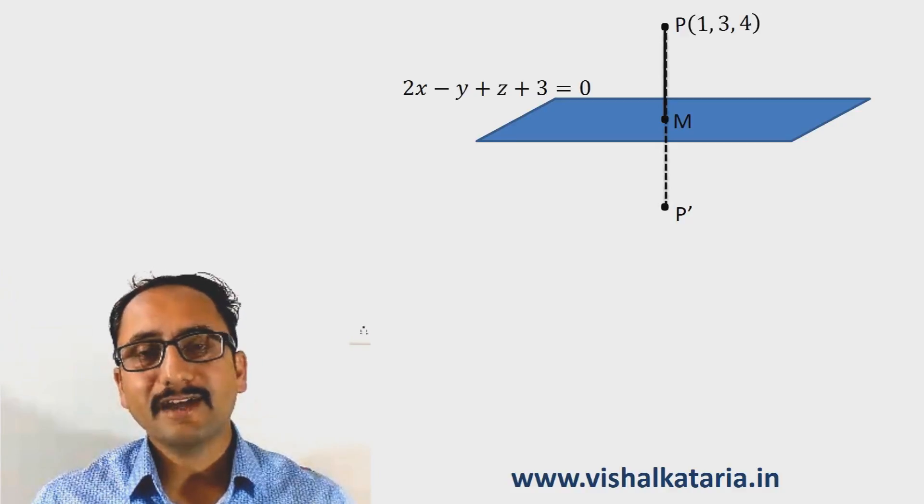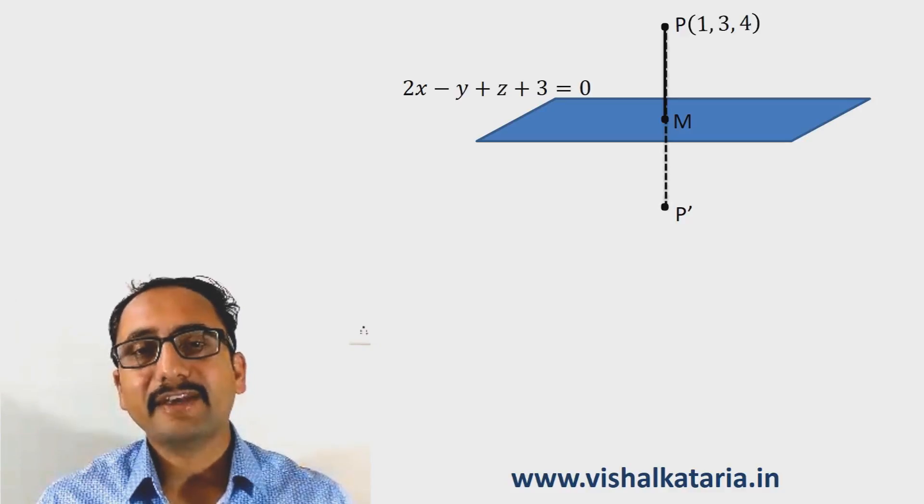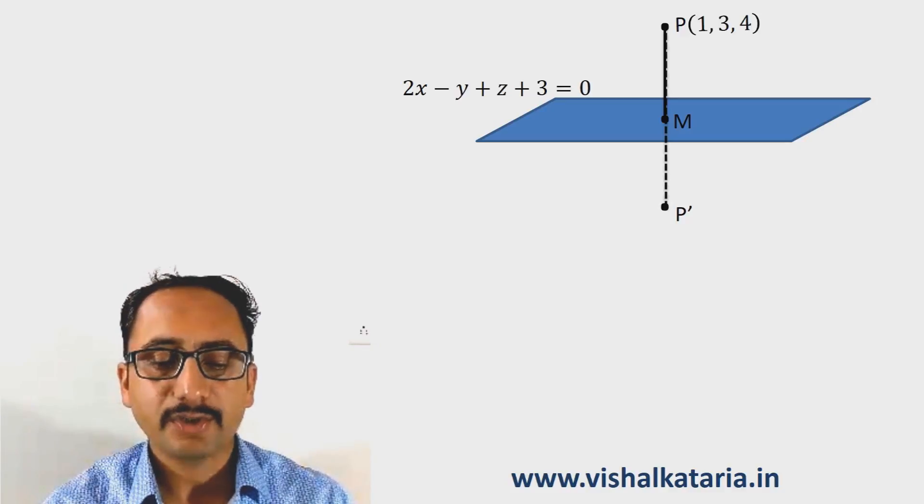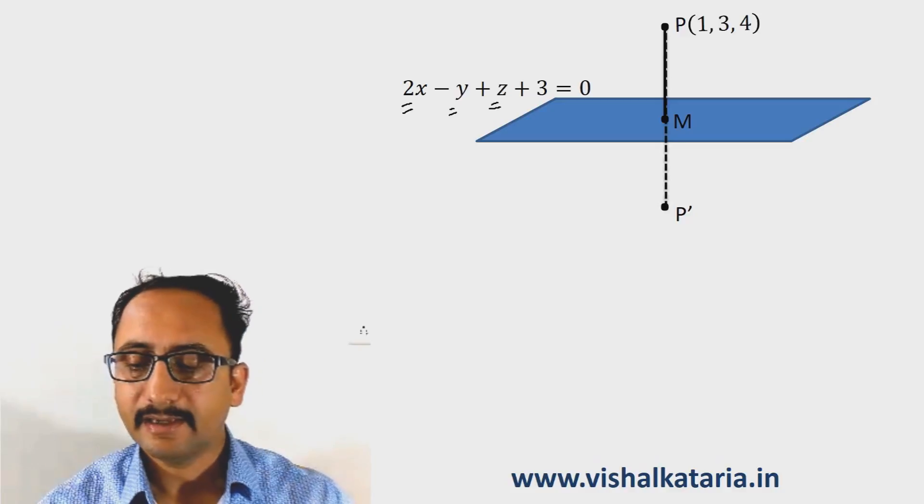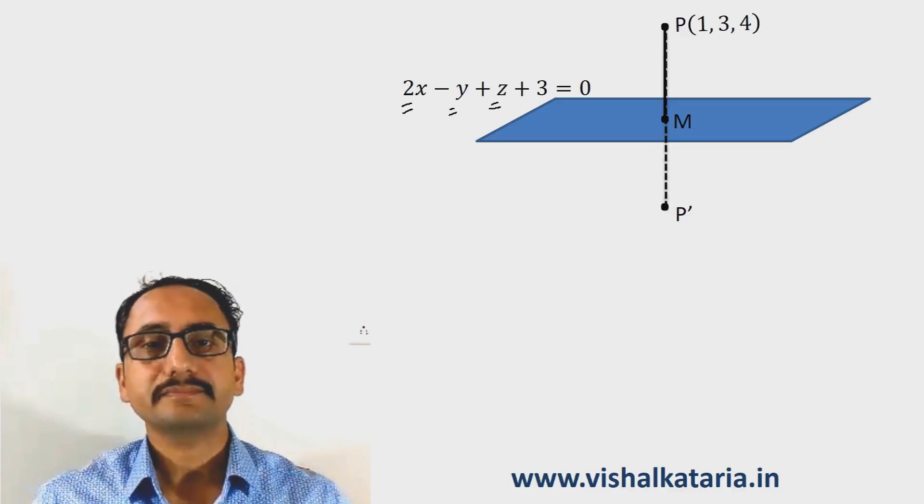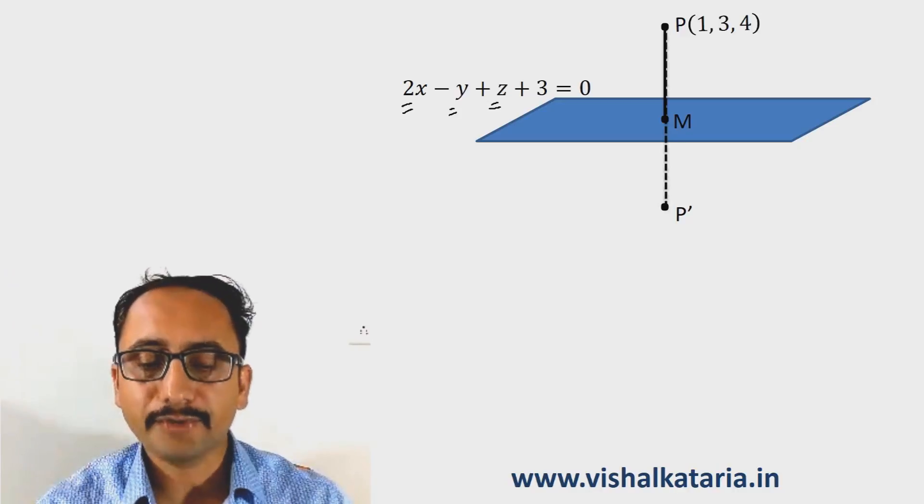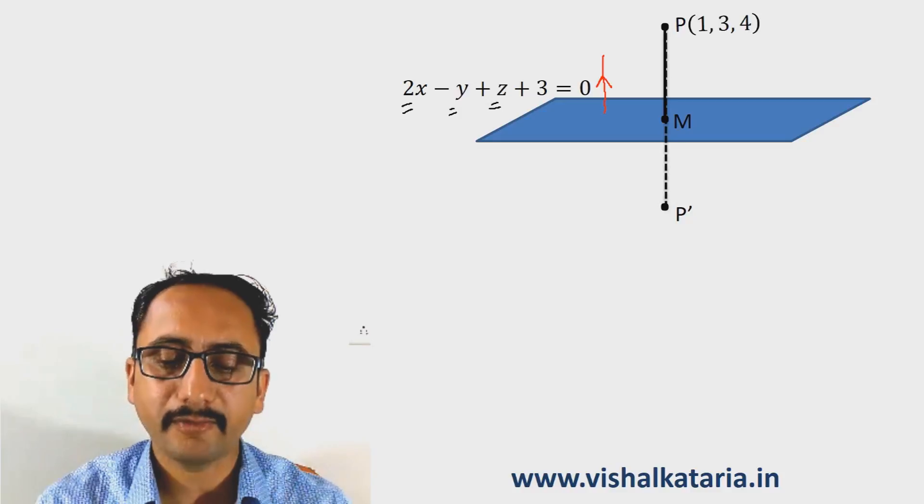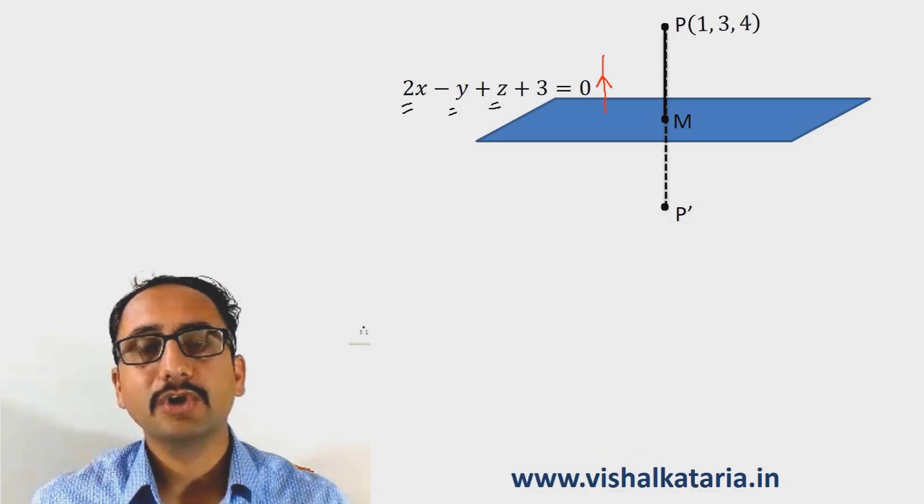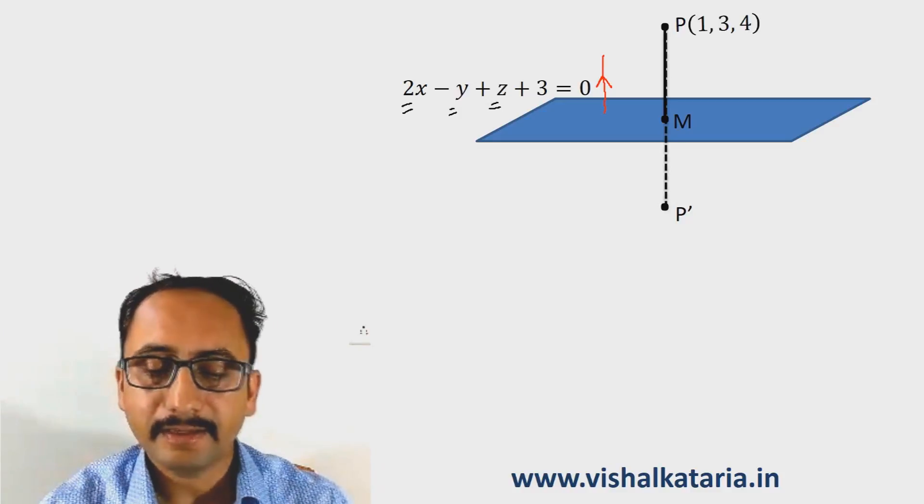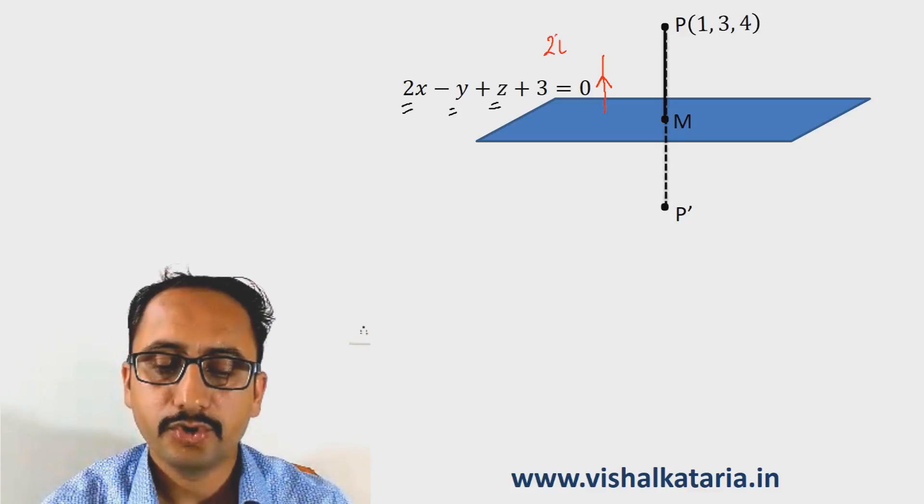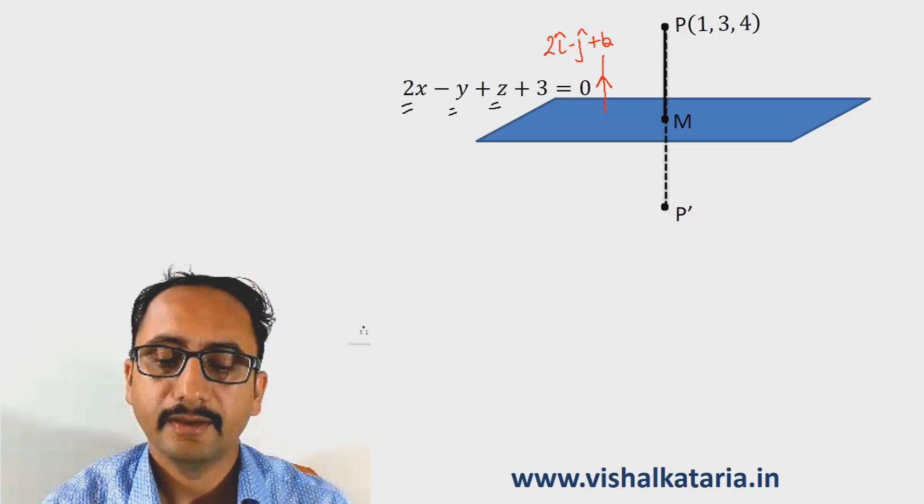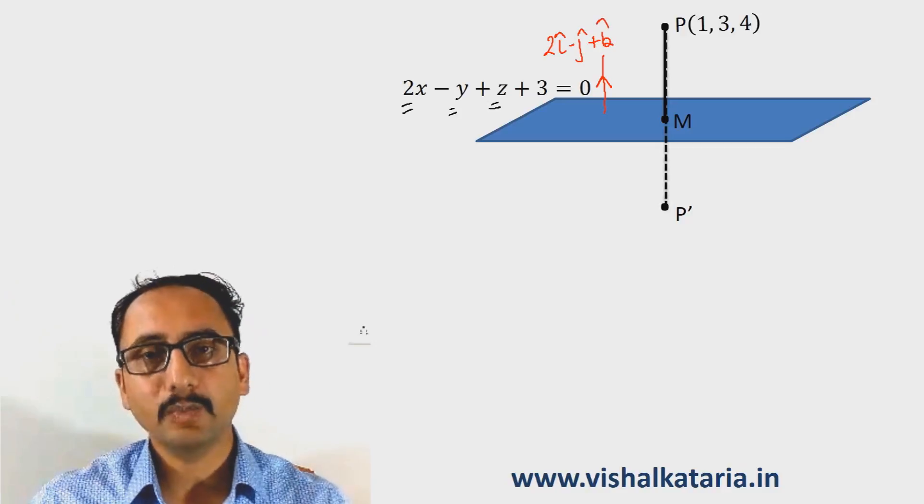Before we start, let's see the significance of coefficients of x, y, and z in the given plane. The coefficients represent the direction ratios of a normal vector. A vector which is normal to the given plane is 2i - j + k. This is a normal vector to the plane.